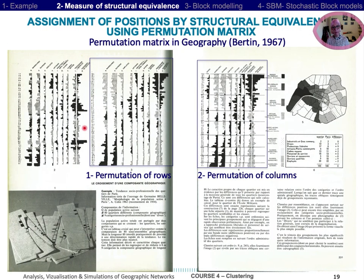We can note that geographers also use permutations of rows and columns, like Bertin in 1967, who used it in order to classify the 80 Parisian quarters and their socio-economic population compositions.